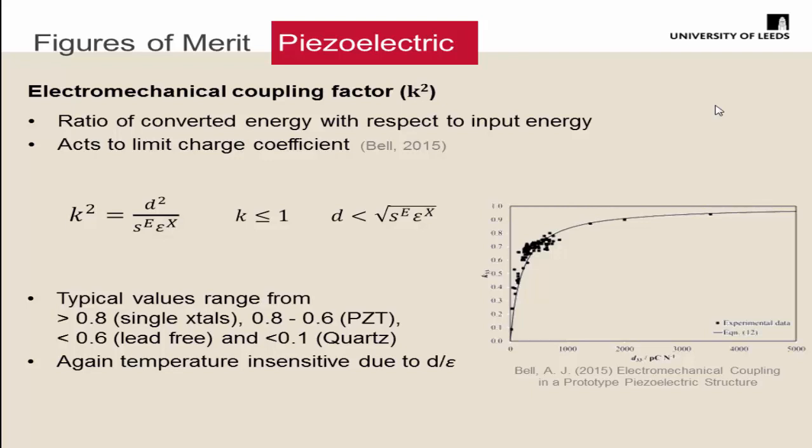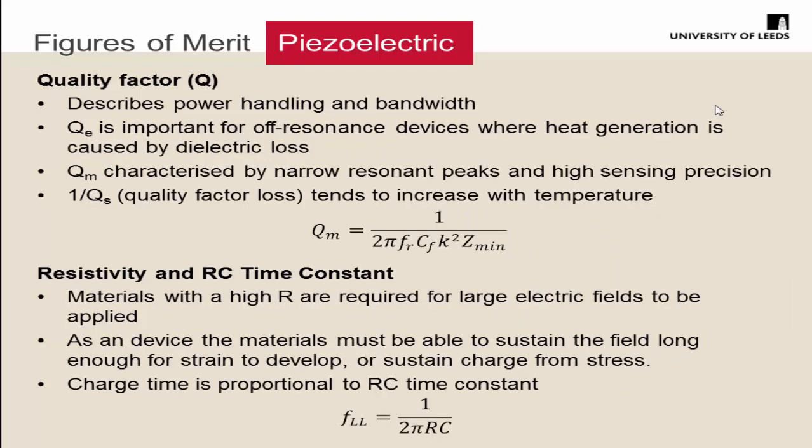There are 120 commercial materials taken from data sheets, plotted out as K as a function of D33. The quality factor is something we haven't necessarily measured but we've taken into account. Resistivity has been the ultimate killer so far — we require high resistance to be able to apply the large electric fields we want for measurement, and in any device. We need to watch the RC time constant to be able to apply the electric field and have it there long enough to take the measurement, or the opposite way as a sensor.